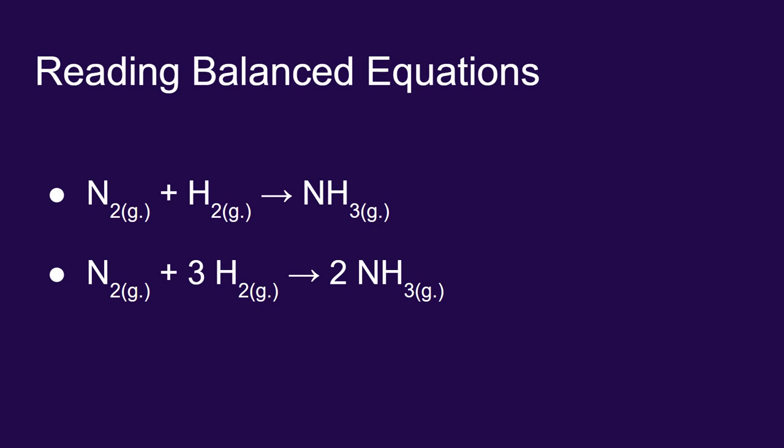One other twist. We won't rely on this in this chapter, but later we'll see if they're all gases, we can read these in terms of liters. So I could say one liter of nitrogen gas combines with three liters of hydrogen gas to make two liters of ammonia gas.